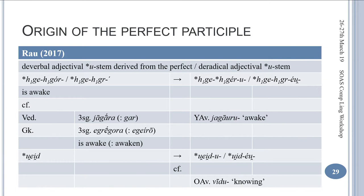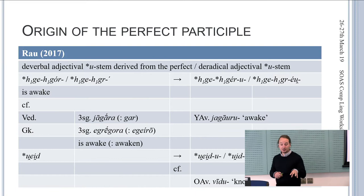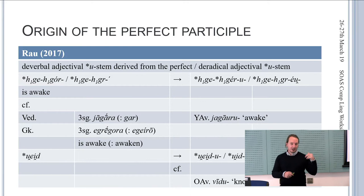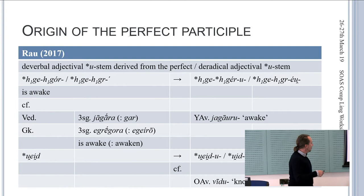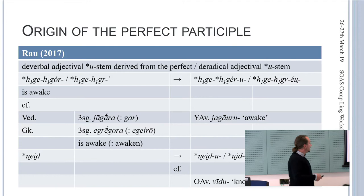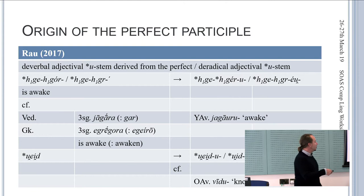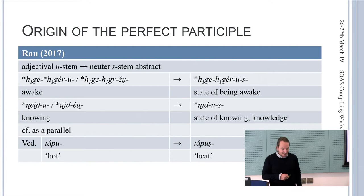Jeremy Rao assumed that originally the perfect participle started out as a deverbal adjectival u-stem derived from the perfect or directly from the root. So from the perfect jagara we get jagarū, a derived u-adjective. This is directly attested; for example, Vedic vidū 'knowing' from the vid root. These are directly cognate: kekamu in Tocharian is directly cognate with jagarvās in Sanskrit and bebēōs in Greek.